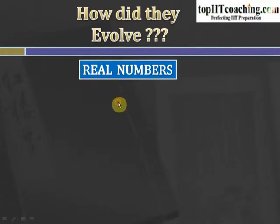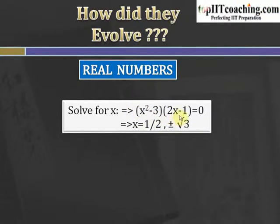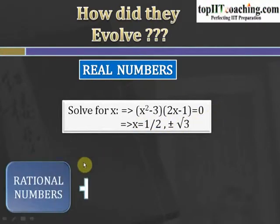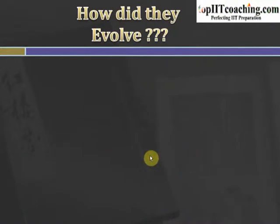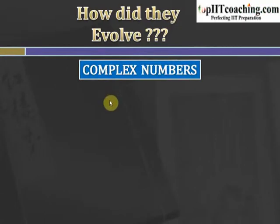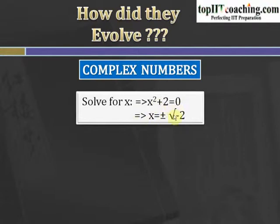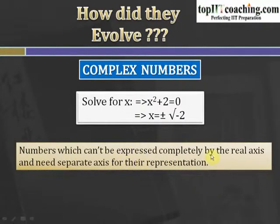Then came the system of real numbers. For an equation like 2x minus 1 equals 0, we get roots such as x equals 1/2 and plus or minus root 3. Mathematicians devised a system called real numbers — a combination of all rational and irrational numbers. Then finally came the concept of complex numbers. For an equation x squared plus 2 equals 0, the roots are x equals plus or minus root of minus 2. Since the square root of a negative quantity was unknown, mathematicians devised a new system — complex numbers.